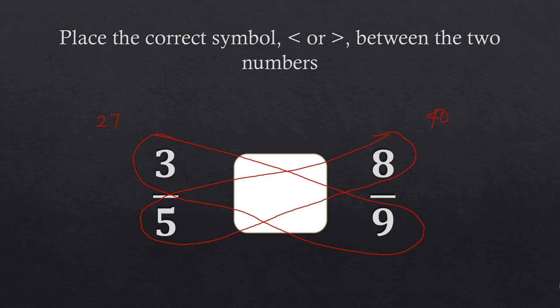So our symbol here will be opening towards 40. So we have this as the symbol, and of course this is now three fifths less than eight ninths.